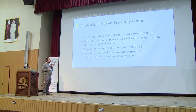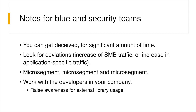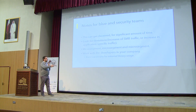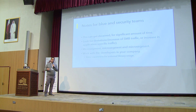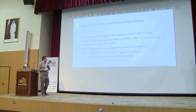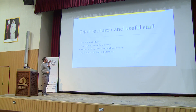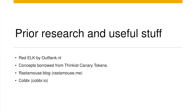For blue teams: you can get deceived for a very long time and not even know about it. Look for deviations in your traffic — if you see an increase in SMB traffic from a host, and in an application like Slack, that should have been your indicator that something is wrong in the network. Always micro-segment — filter out all unwanted traffic everywhere in your network. Work with your developers and raise awareness about using libraries. Red ELK is an excellent concept.